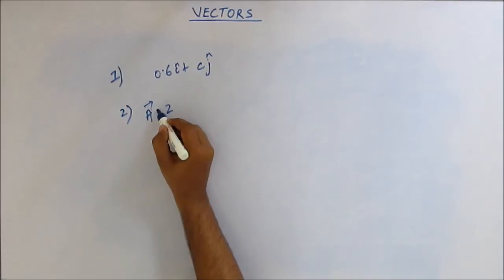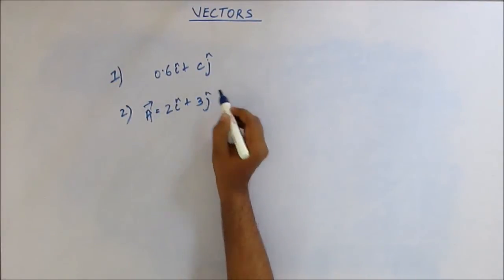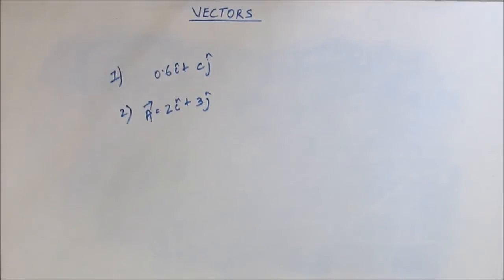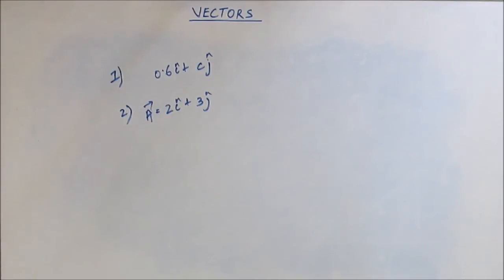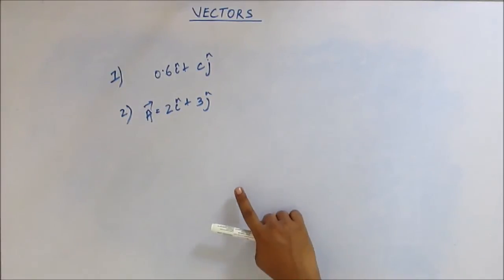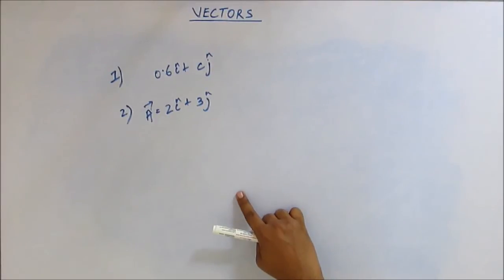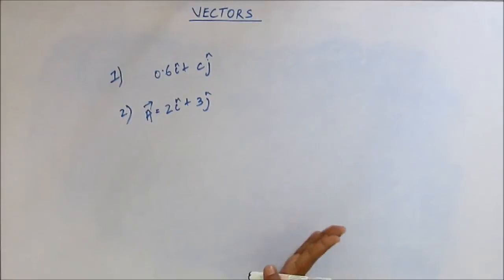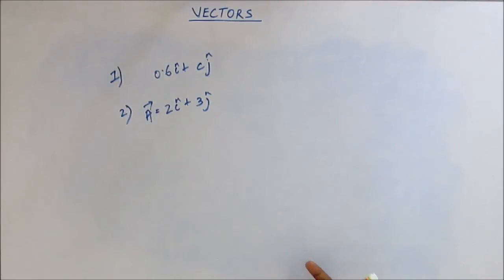Question number two: vector A equals 2i-cap plus 3j-cap. Find a unit vector which is in the direction of vector A. This vector points in a particular direction in the xy-plane — this vector doesn't have magnitude one, so it's not a unit vector. In that particular direction, give me a unit vector. Work this one out.